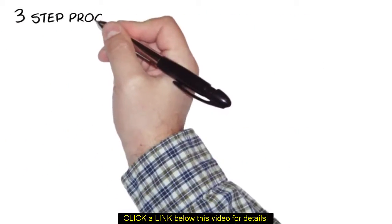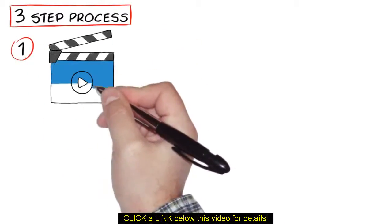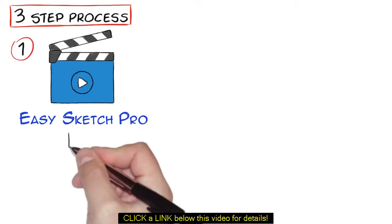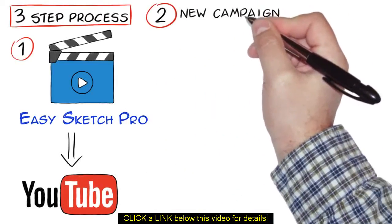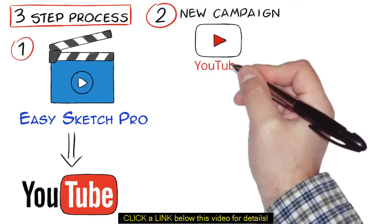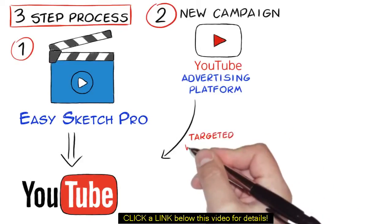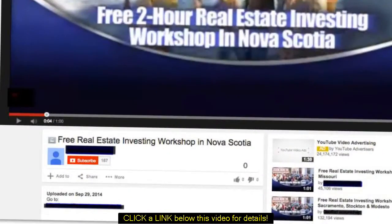It's a simple three-step process. One, create an attention-holding video using EasySketch Pro or your favorite video software and upload it to YouTube with the link in the description and caption back to your website or your offer. Two, create a new campaign using the YouTube video advertising platform and then super-drive targeted visitors to your video on YouTube. And three, sit back and watch.